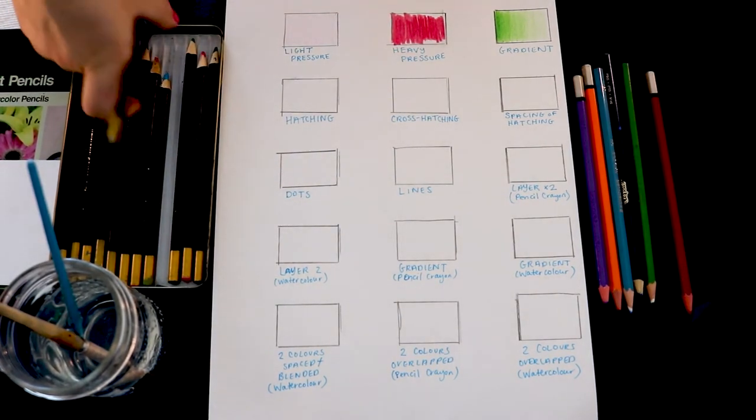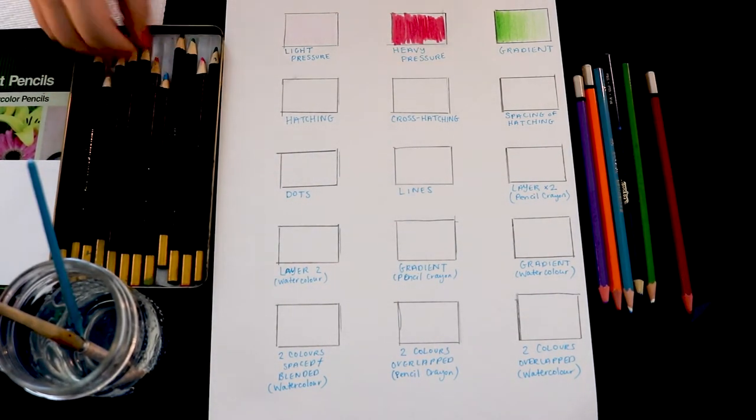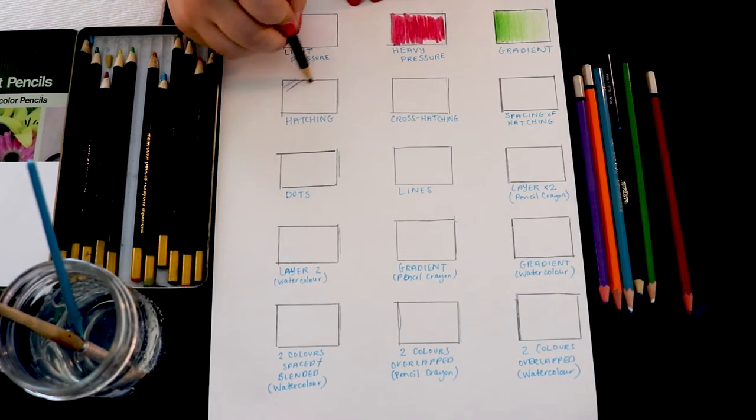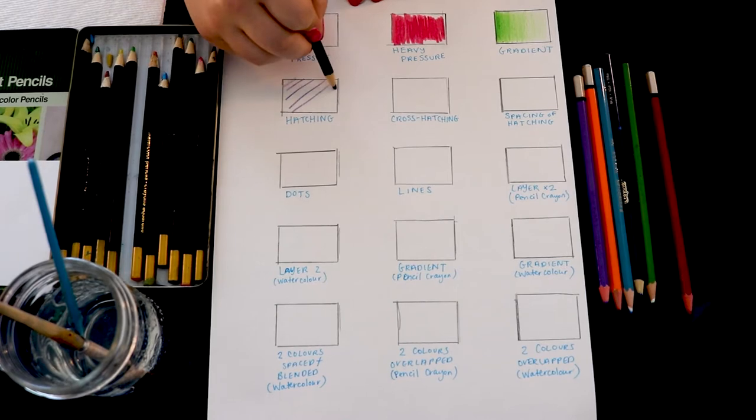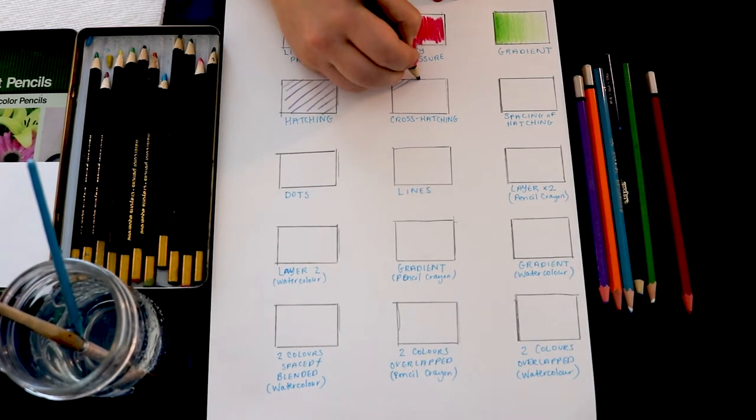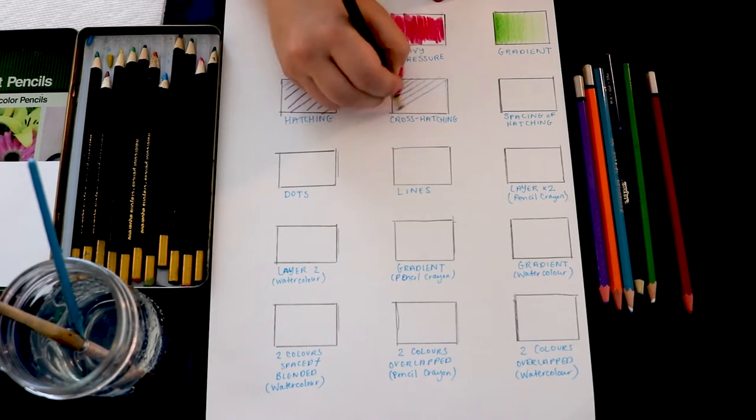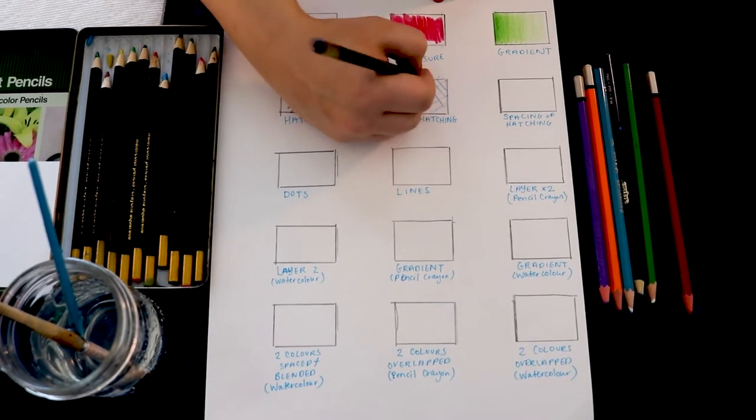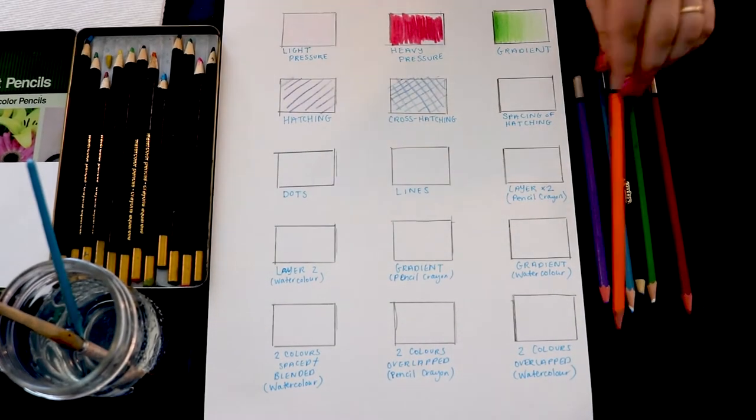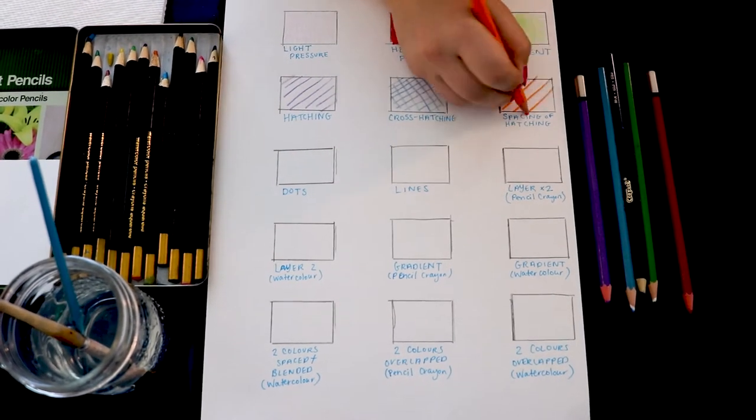Now try experimenting with using different types of lines to create texture. Hatching is where we use lines going in one direction to shade an area. Cross hatching is when we use lines in two directions to shade an area. These lines can be placed close together or far apart. You can also use other kinds of lines like dots, curvy lines or jagged lines.